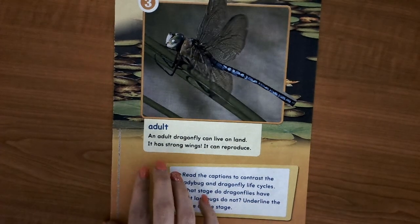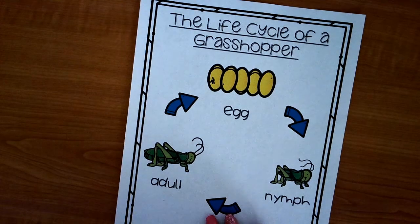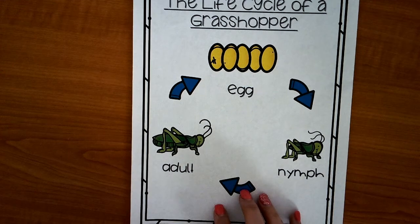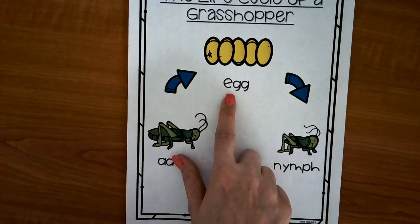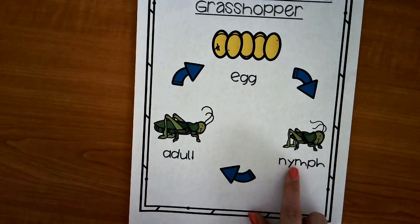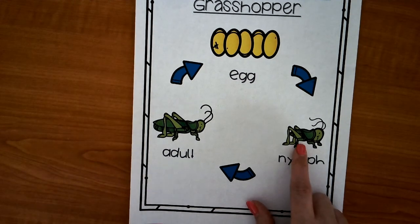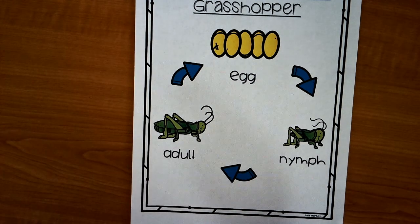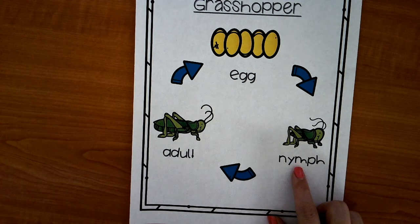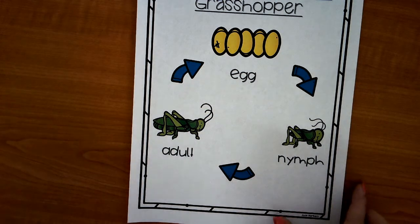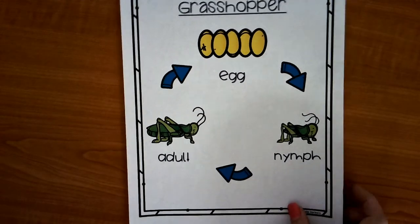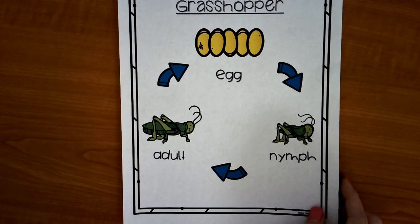We're going to take a second away from the book and talk about a grasshopper, because it also goes through the same three stages. It starts as an egg, it then turns into a nymph, which is just a smaller version of the adult, and then it grows into the adult. So this has fewer stages, making it a simpler process than the one you learned about with Miss Conrad.